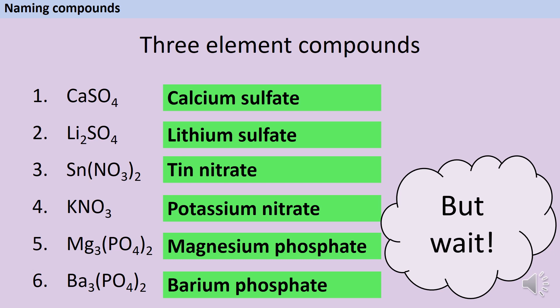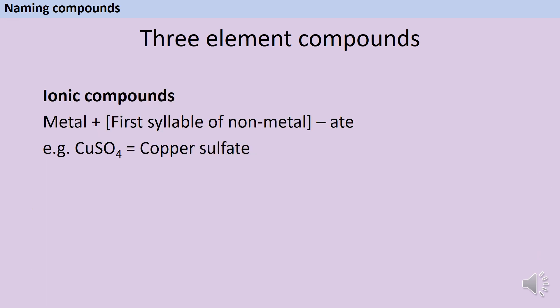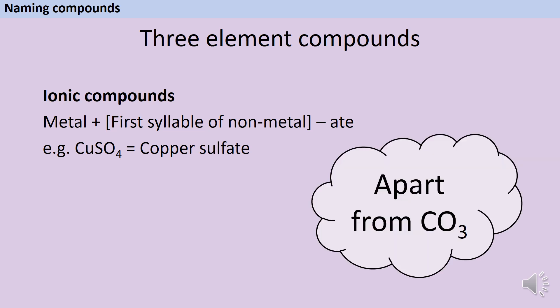Now wait, there is one exception to this rule. We said that to name an ionic compound with three elements in it, you take the name of the metal, the first syllable of the nonmetal, and then put ate on the end to show that it contains oxygen. But there is one exception. If that nonmetal element is carbon, then you don't just take carb, you actually take carbon. So compounds that contain CO3 at the end are not called carbates, they're called carbonates. For instance, copper, carbon, and oxygen makes copper carbonate.